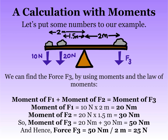In this particular case, F1 is 10N and F2 is 20N. The distance of each rock from the fulcrum is given. We can find the force F3 by using moments and the law of moments. The law of moments tells us that the moment of F1 plus the moment of F2 equals the moment of F3. The moment of F1 is 10 times 2, which is 20Nm. Similarly, the moment of F2 is 20 times 1.5, which is 30Nm. So using the law of moments again, the moment of F3 is 20 plus 30, which is 50Nm. We can rearrange our moment formula to find force F3: F3 equals 50 divided by 2, which is 25N. And there you have it.